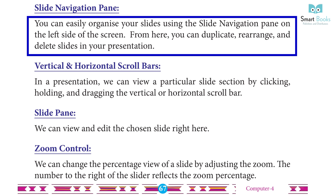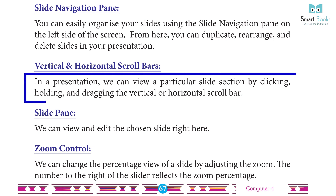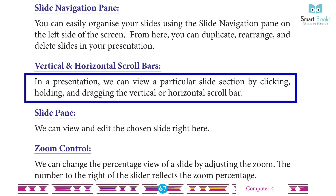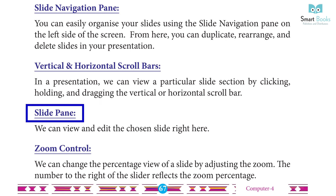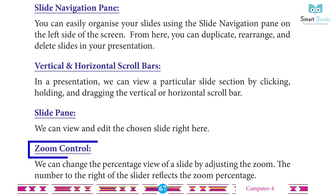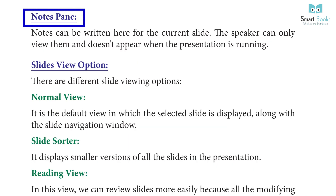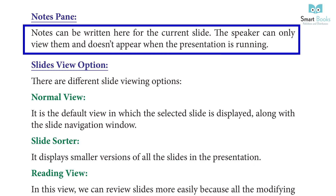Vertical and horizontal scroll bars allow you to view a particular slide section by clicking, holding, and dragging. The Slide Pane is where you can view and edit the chosen slide. Zoom Control allows you to change the percentage view of a slide — the number to the right of the slider reflects the zoom percentage.